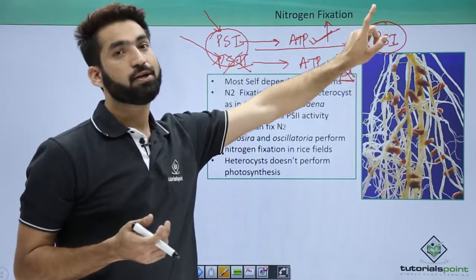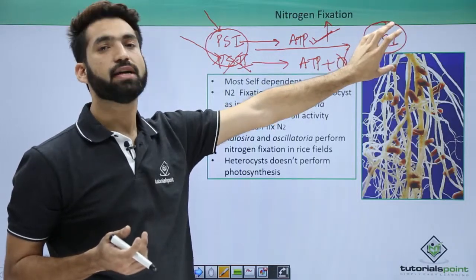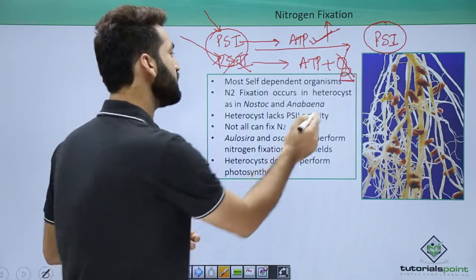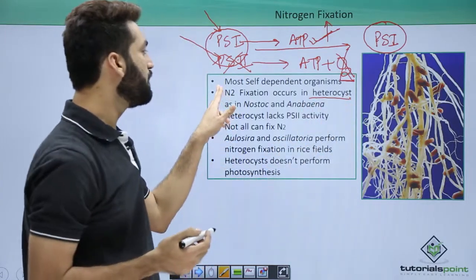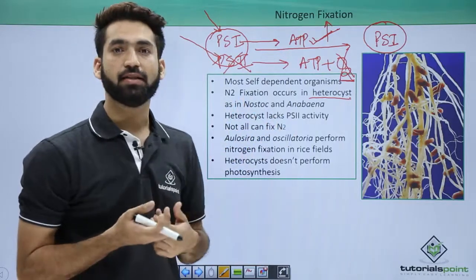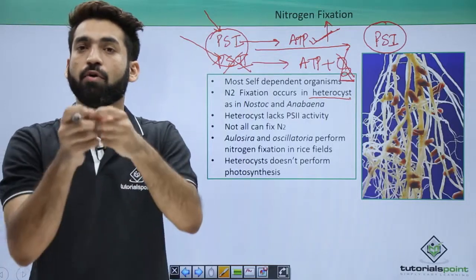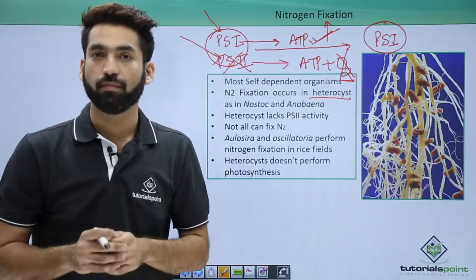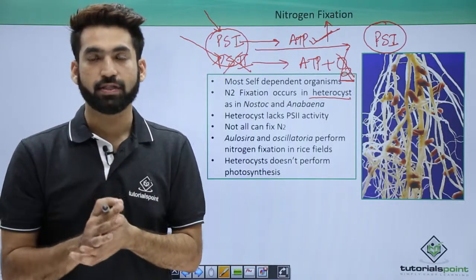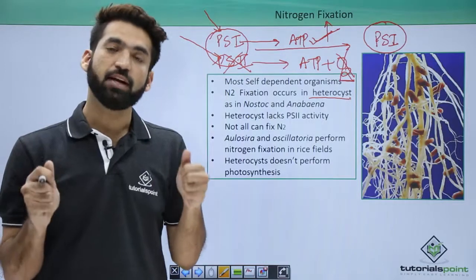The form of cyanobacteria which lacks PS2 activity is called a heterocyst. Heterocysts perform N2 fixation and occur in Nostoc, Anabaena, and some other cyanobacteria. However, not all cyanobacteria form heterocysts — only some cyanobacteria form heterocysts and thereby perform nitrogen fixation.